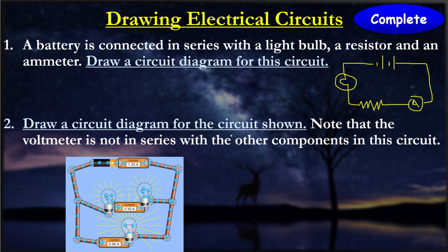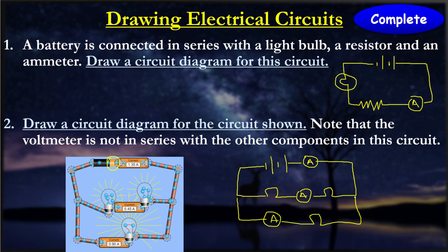The next one says draw a circuit diagram for the circuit shown below. Note that the voltmeter is not in series with other components in this circuit. So this is our circuit here. It doesn't actually have a voltmeter, but it doesn't matter. We have our battery source here. This part of the battery is actually the positive part, so that's where the longer hand should go. And then we have drawn here one light bulb, an ammeter, another bulb goes back, an ammeter here, an ammeter here, and a bulb here. That's how you draw this component of the electric circuit diagram.